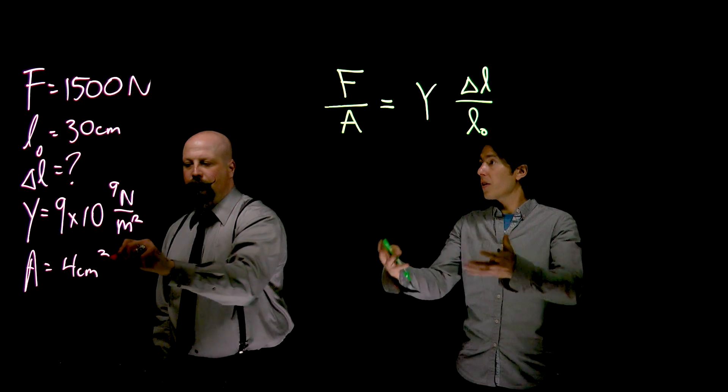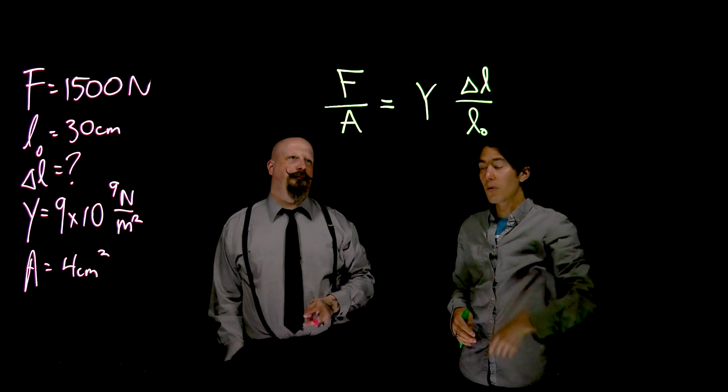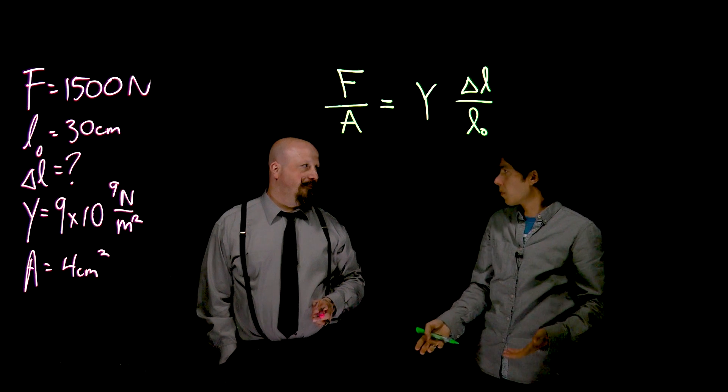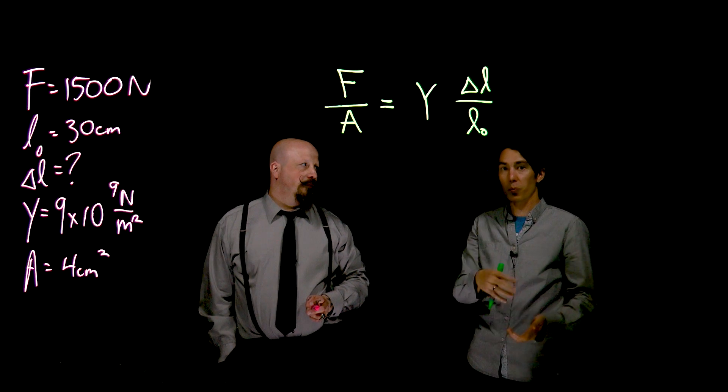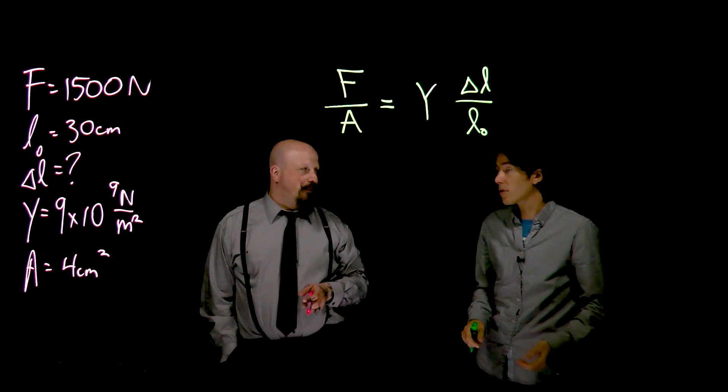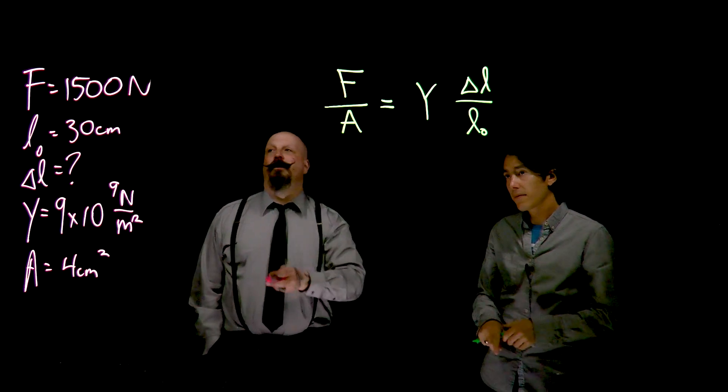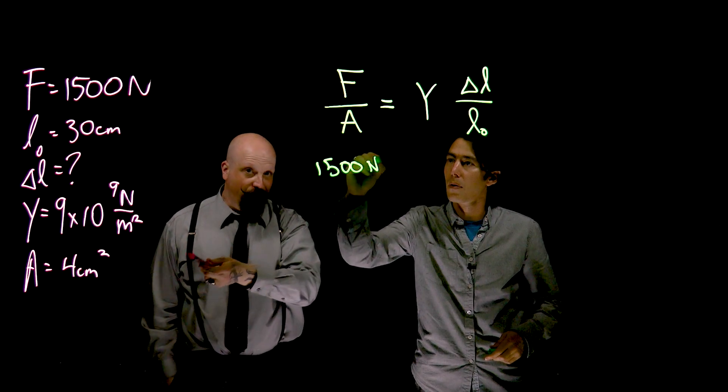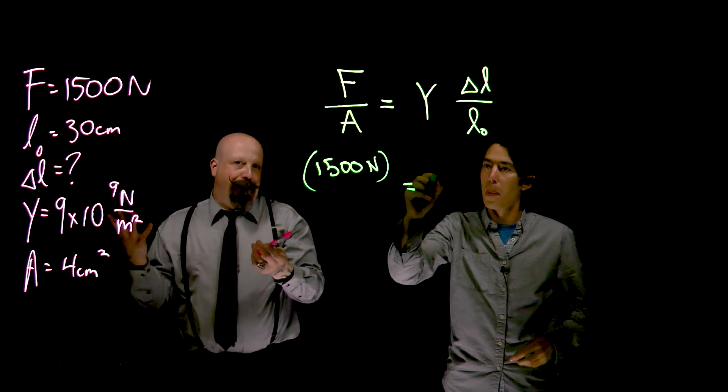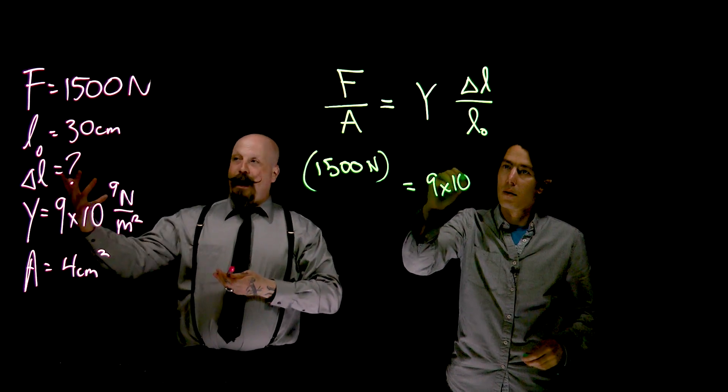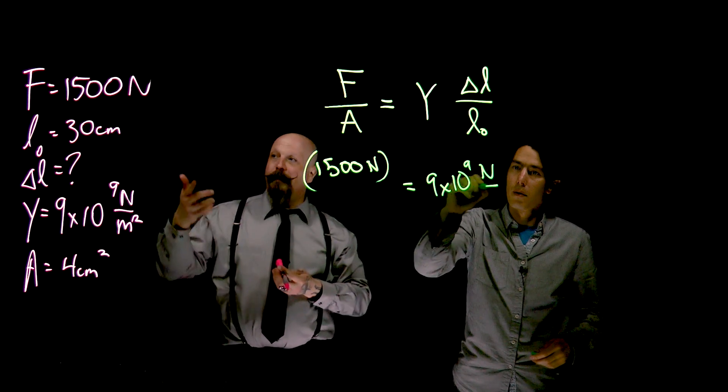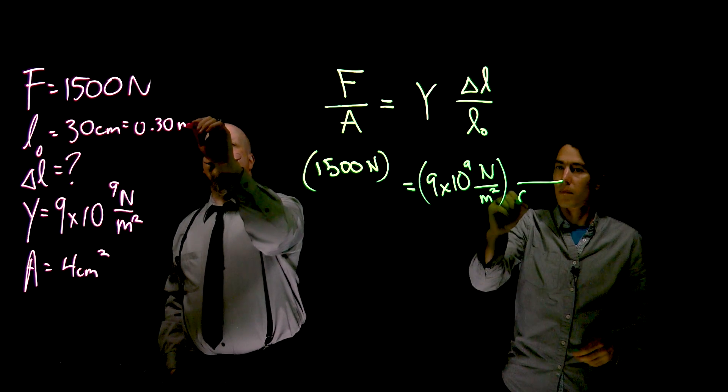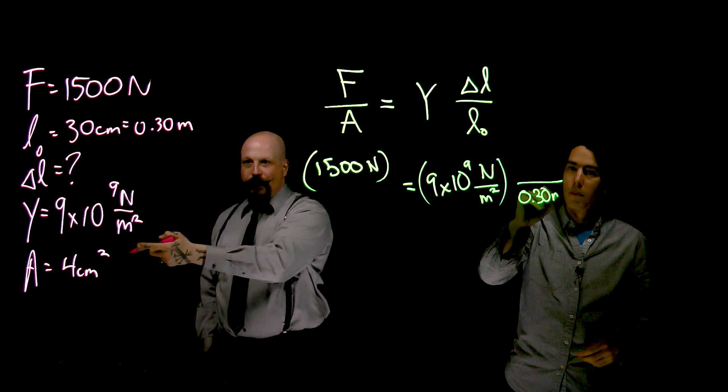So we have all the numbers we need to calculate this one unknown. And what I've done is I've given it to you in a variety of units because I think that's one thing where possibly the most challenging part of this problem is making sure that you do your unit conversions. So the first thing we should do is convert these into SI units. Force is already in Newtons, so that's fine. Our modulus is in Newtons per meter squared, both SI units. L-naught is easy to convert from 30 centimeters. It's just a value of 0.30 meters.